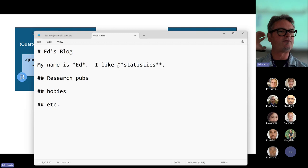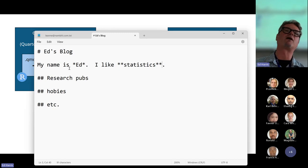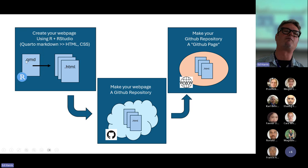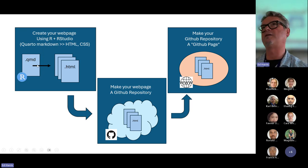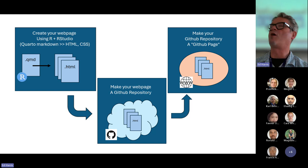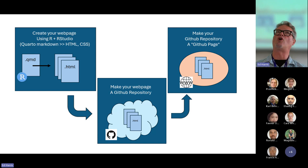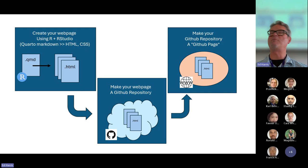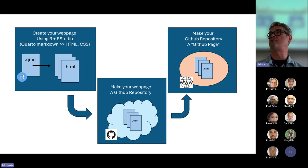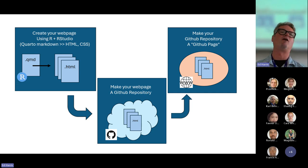We'll look at this when we go to R. The flavor of Markdown we're going to use is called Quarto Markdown. Markdown itself was invented as an alternative to HTML — it's even simpler than HTML. What happens is that the Markdown language gets converted automatically by a piece of software to the more complicated HTML to do all the marking up, highlighting, and text formatting.